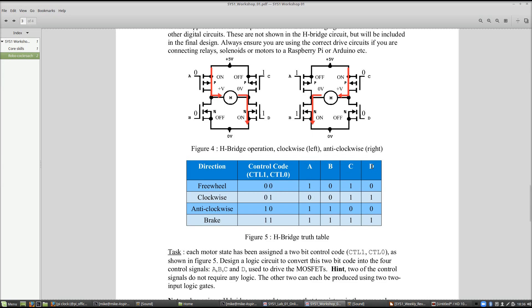We want to control those using a two-bit control code - control signal 1 and control signal 0. We assign each of those control signal states a movement: 0-0 is freewheel, 0-1 is clockwise, 1-0 is anti-clockwise, and 1-1 is brake. Each one of those needs to be decoded into those control signals - that is your first task here.